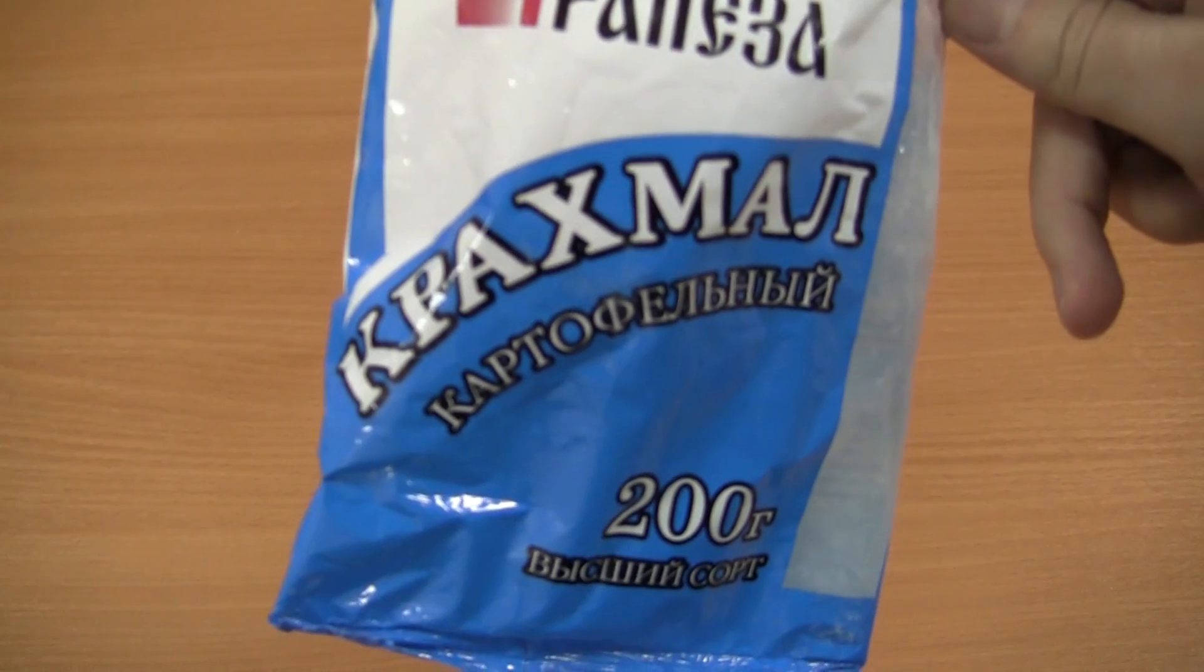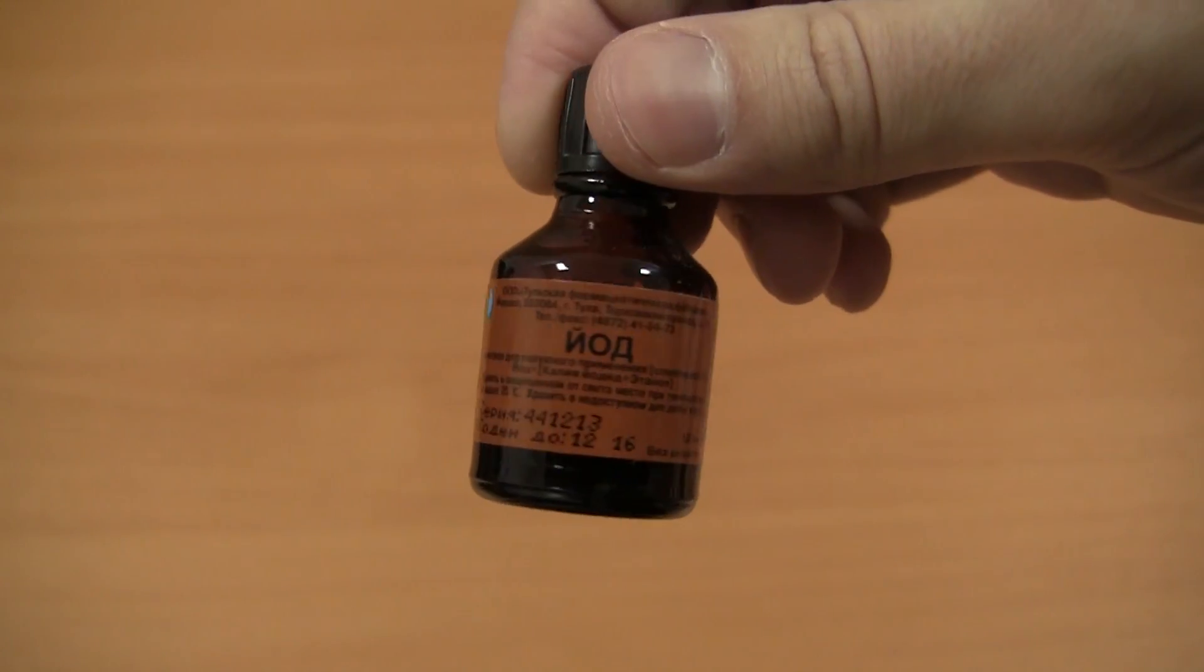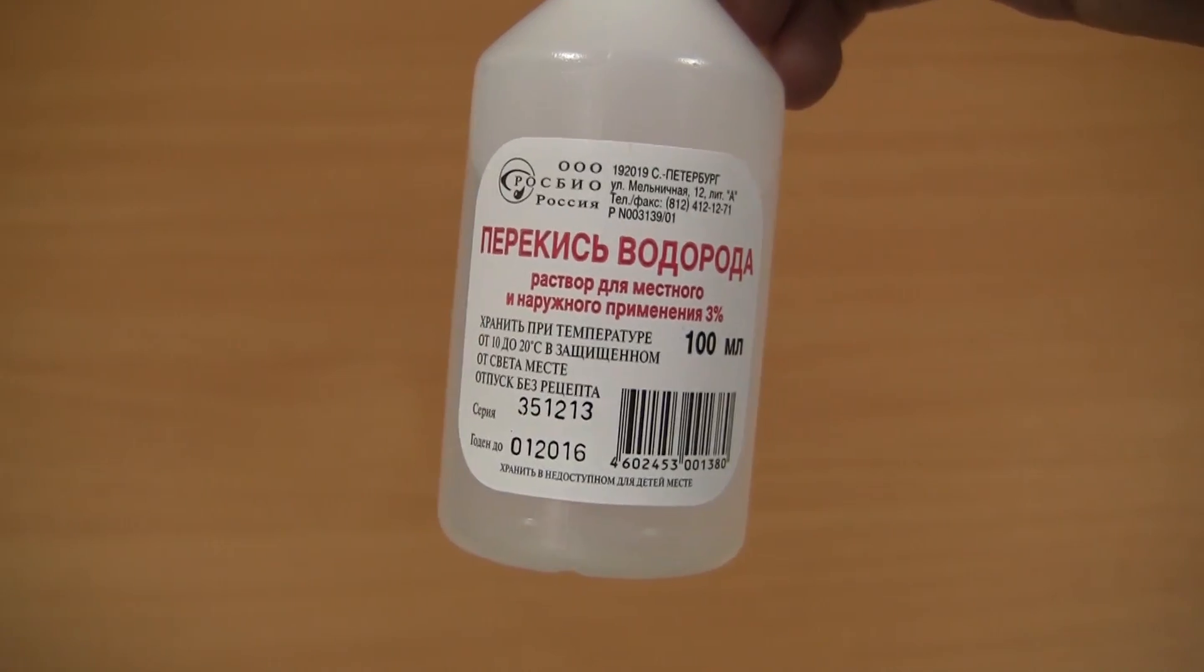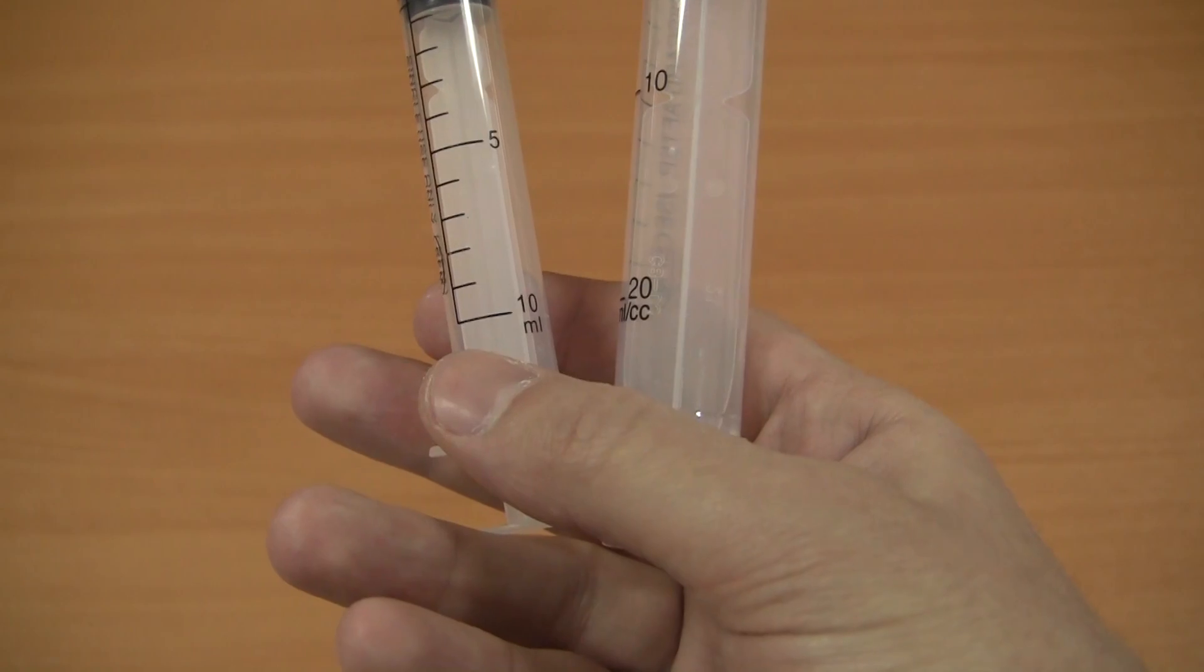Potato or corn starch, 1 g of vitamin C, tincture of iodine, and hydrogen peroxide.